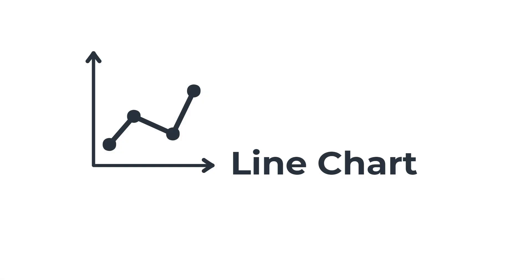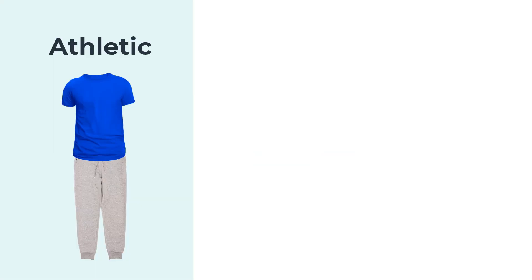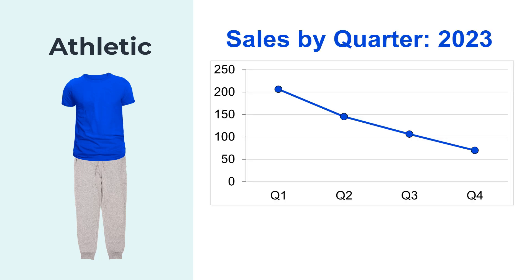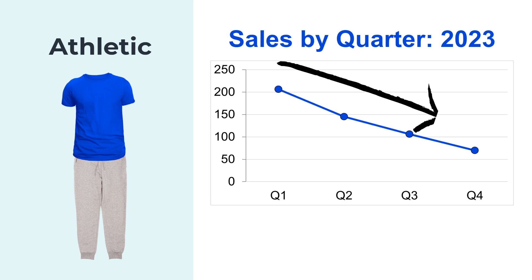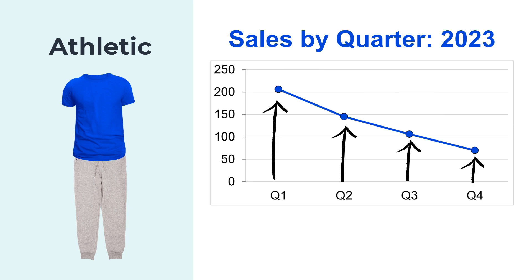Let's now look at best practices when it comes to creating a line chart. For our example, we are going to look at the athletic line of a store that sells clothing and plot their sales by quarter. As you can see, a line chart has data points that are connected together by a line. A line chart emphasizes direction — as in this example where we can see that the sales are declining quarter by quarter. In a line chart, the height of each data point is actually of lesser importance than the movement and direction of the line itself.